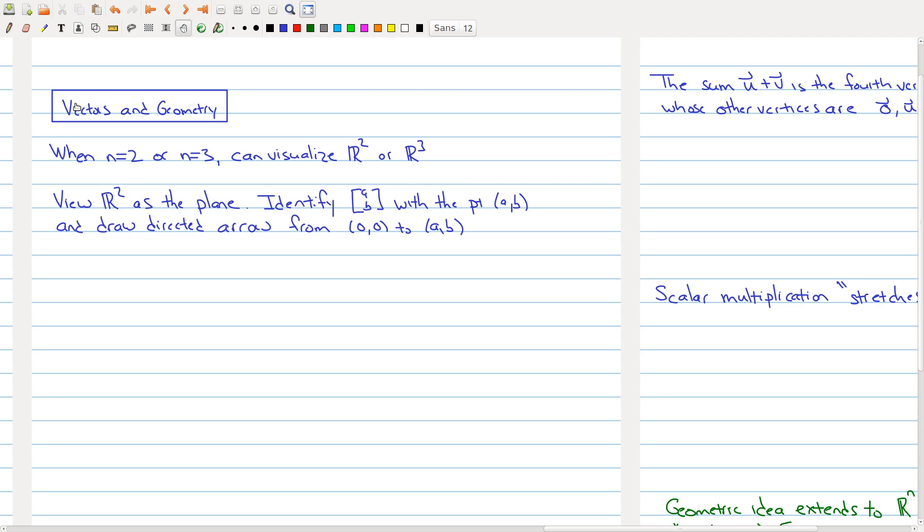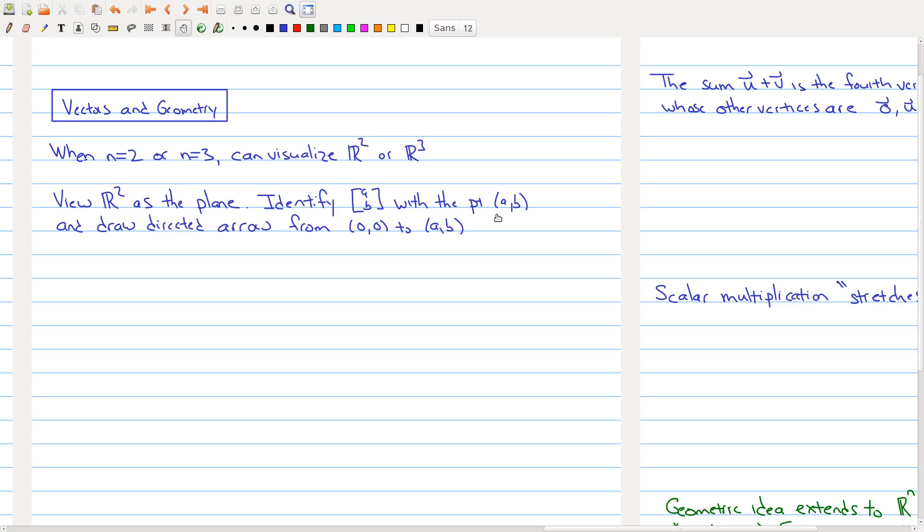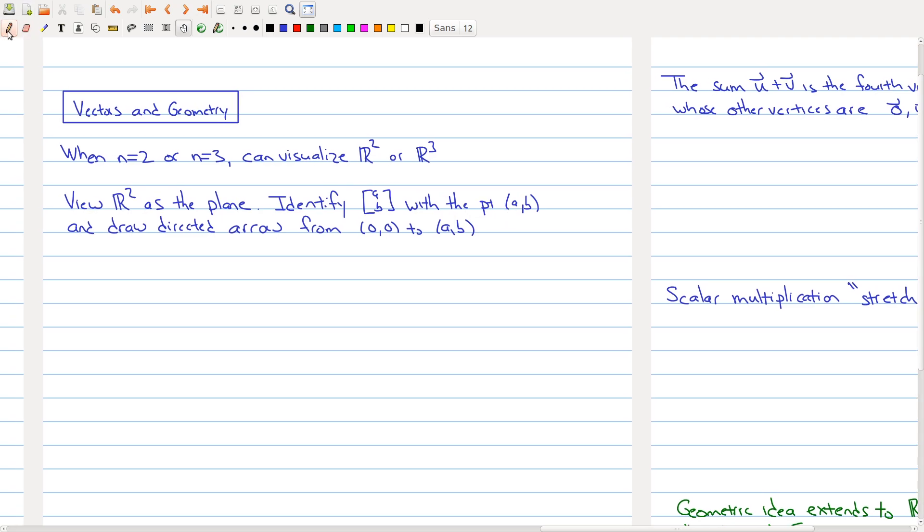Now you might be familiar with R2 and R3 from your calculus class. Normally you view R2 as the plane. When you talk about points on the plane, you're using the Cartesian system where, for example, you would write your points as (a,b). So what we're going to do is identify a vector in R2. Remember that's a column, and in R2 it would have two rows. We're going to identify the vector (a,b) with the point (a,b) in the Cartesian plane.